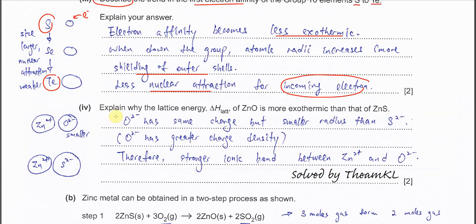Part (iv): explain why the lattice energy of zinc oxide is more exothermic than zinc sulfide. We know that oxide and sulfide are in the same group. The oxide is a smaller size, sulfide is larger with more electron shells. The charge for oxide and sulfide is 2-, but the size of the oxide is smaller, so the charge density for oxide is greater.